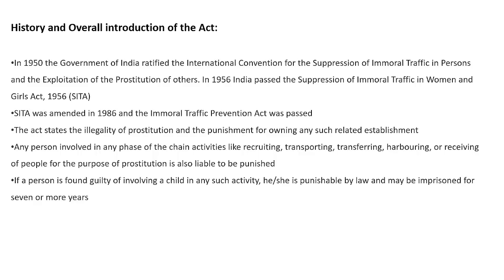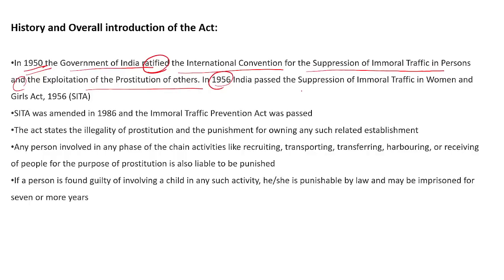Starting with history and overall introduction: in 1950, the Government of India ratified and made changes to the international convention for the suppression of immoral traffic in persons and the exploitation of prostitution of others. Then in 1956, the Indian government passed the Suppression of Immoral Traffic in Women and Girls Act 1956. The Act was amended again in 1986, and then the Immoral Traffic Prevention Act was passed.